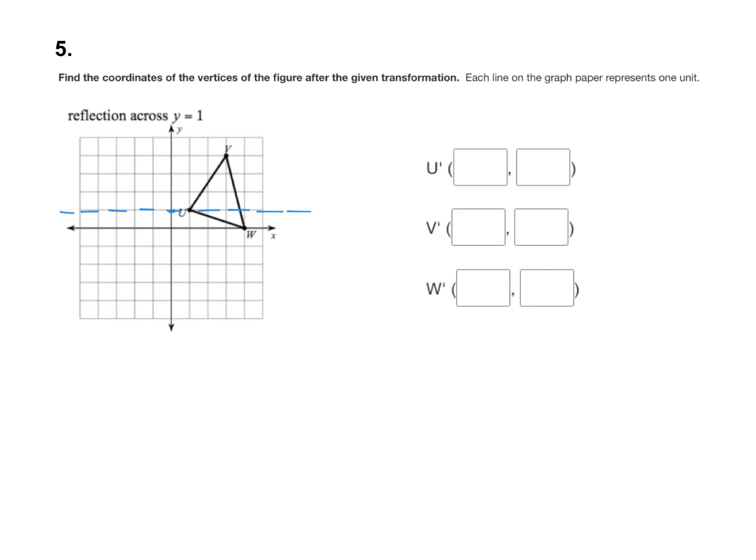Now I just flip the points across that line. Notice how point U is right on the reflection line. When something's on your reflection line and you flip it across, it's still going to stay in the same spot. So the coordinates of U are (1,1), and the coordinates of U prime are also (1,1).